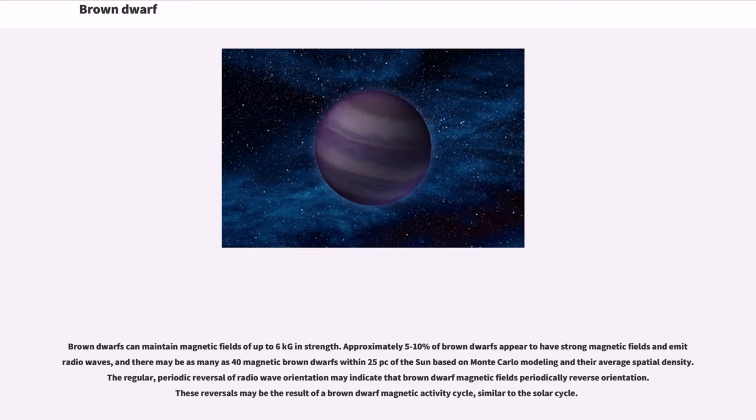Brown dwarfs can maintain magnetic fields of up to 6 kilogauss in strength. Approximately 5 to 10% of brown dwarfs appear to have strong magnetic fields and emit radio waves, and there may be as many as 40 magnetic brown dwarfs within 25 parsecs of the sun. The regular periodic reversal of radio wave orientation may indicate that brown dwarf magnetic fields periodically reverse orientation. These reversals may be the result of a brown dwarf magnetic activity cycle similar to the solar cycle.